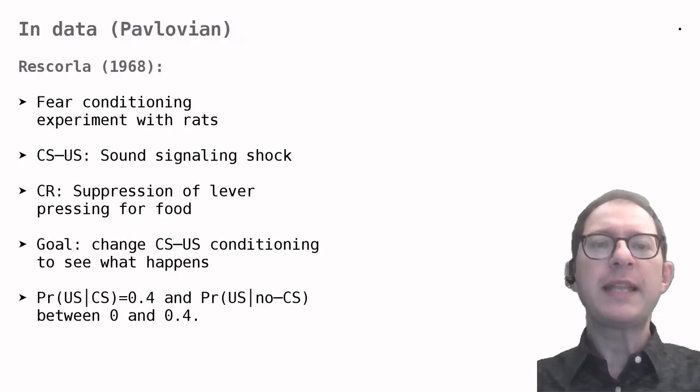Now we are ready to see what animals actually learn depending on the CS-US contingency. We look at a landmark experiment by Rescorla. This is a fear conditioning experiment. You can look at the lesson about Pavlovian preparations for details about this procedure. In short, the rats were trained to press a lever for food, and then a sound shock contingency was introduced. Learning of this contingency was measured by how much the sound could suppress lever pressing.